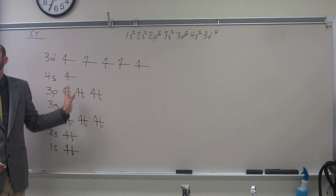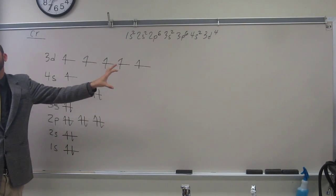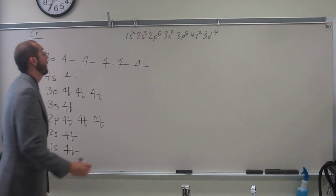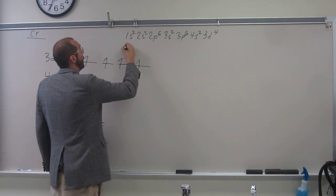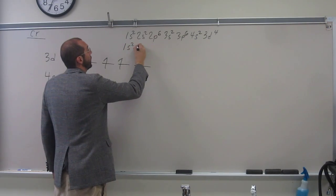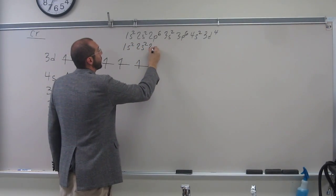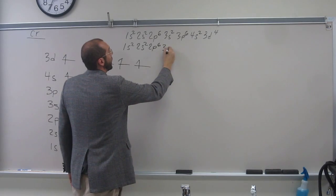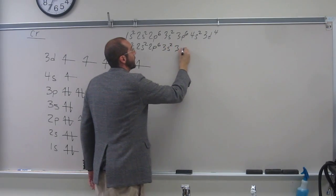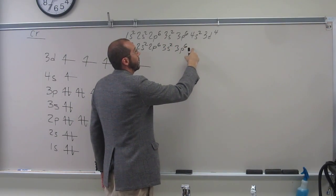Because the 4s isn't all filled up. So now, let's draw the real electron configuration for chromium. Okay? So most of it's the same, right? So you guys can help me if you want. 1s2, 2s2, 2p6, 3s2, 3p6.